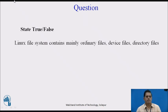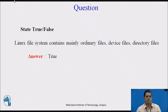The next question: state true or false — Linux file system contains mainly ordinary files, device files, and directory files. The answer is true, because Linux file system contains ordinary files, which are the default files; device files, where we mount all the devices like CD-ROM and floppy disk; and directory files, where we install directories in the Linux system.